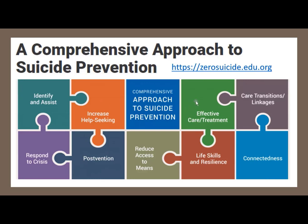Care transitions and linkages are very important because follow-up is critical — you can treat at one point, but if not following up to ensure reinforcement of what one has learned, it sometimes fails and people repeat the cycle. Also responding to individual crises, postvention work, reduce access to means to harm — the important piece that people not have means to sources of self-harm. Life skills and resilience are follow-up elements which may also involve some kind of economic component. And then this sense of connectedness and social support — these are elements of the micro process involved in this transformation effort.